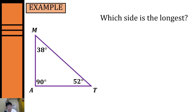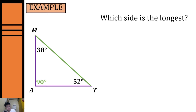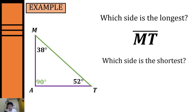Let's have another example. We're given a triangle and we're going to look for the longest side. In order to find the longest side we have to identify the largest angle. Our largest angle is angle A with 90 degrees. Using the Angle Side Inequality Theorem, the side opposite our largest angle will be the longest side, so our longest side will be side MT.